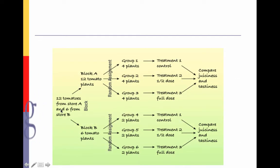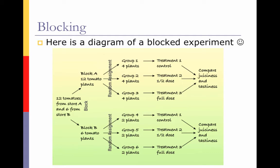Here is a diagram of a similar situation. In this case, we actually bought 12 from one store and six from a different store. We block this out by having block A with 12 tomato plants and block B with six tomato plants. Then we would have four plants in each of the three groups — randomly assigned. Each treatment has the control, half dose, and full dose, and then you compare. In the second block, we randomly assign two plants to each group: one group gets the control, the half dose, and the full dose, and again we compare.